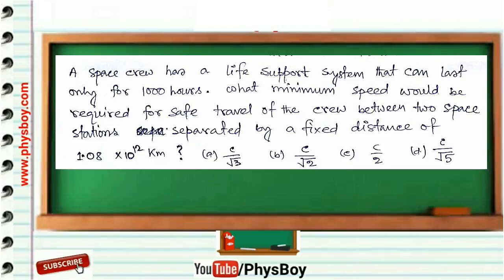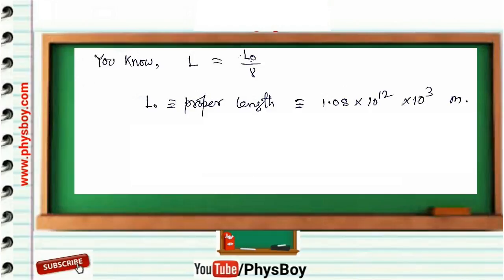Next question: a space crew has a life support system that can last only 1000 hours. What minimum speed is required for safe travel between two space stations separated by a fixed distance of 1.08×10¹² km? Option A: c/√3, Option B: c/√2, Option C: c/2, Option D: c/√5.